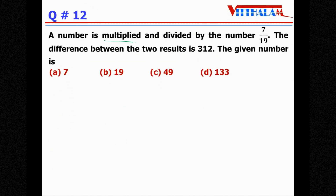Question 12: A number is multiplied and divided by 7/19. Since 7/19 is less than 1, the difference between the two results is 312. Remember: when you divide any number by a fraction less than 1, the division result is higher than the multiplication result. So the equation is: x ÷ (7/19) − x × (7/19) = 312.